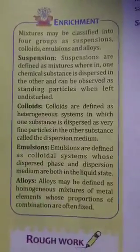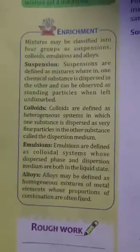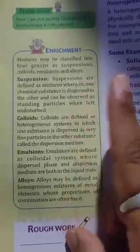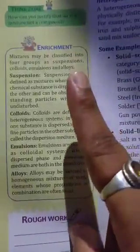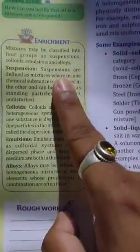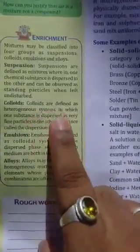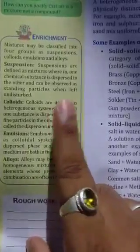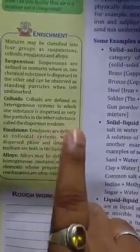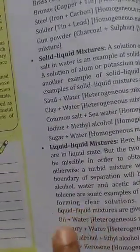Mixtures may be classified into four groups: suspensions, colloids, emulsions, and alloys. Suspension means the mixture contains particles that settle out if left undisturbed — for example, sand and water, where sand settles at the bottom. Colloids means a mixture containing mid-size particles that do not settle out — for example, milk, where the particles remain mixed. Emulsion means both components are in a liquid state — for example, oil and water.